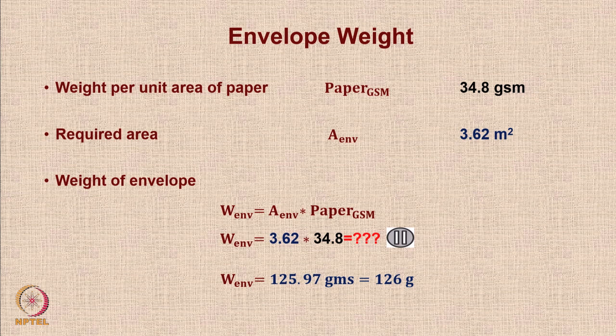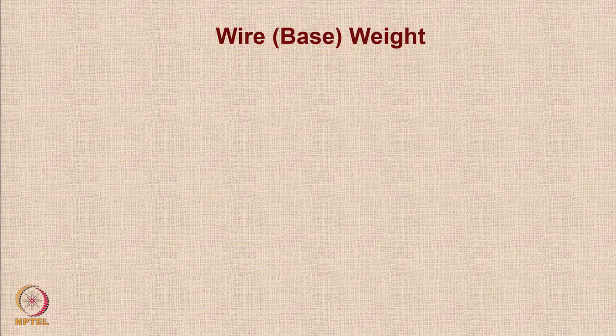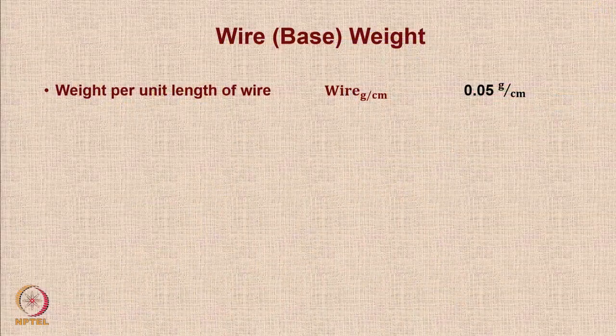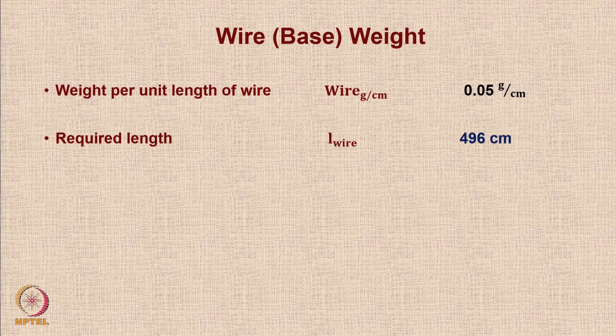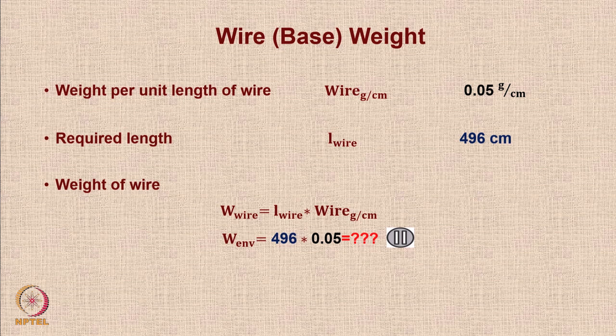For the wire or base installed to mount the payload or fuel, we assume a wire weight of about 0.05 grams per centimeter (5 grams per 100 cm) — a very lightweight wire. We require about 496 centimeters of wire. The weight of the wire is simply the length multiplied by the wire GSM: 496 × 0.05.